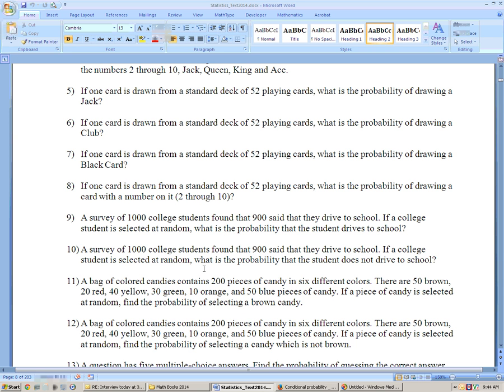Same thing here. If a college student, what is the probability that he does not drive to school? Well, if 900 drive to school, then 100 don't. So that's 100 out of 1,000 or 1 out of 10. You could also get this by doing 1 minus this answer. This answer here was 9 out of 10 or 90%, so this one's got to be 1 minus 90% or 10%.